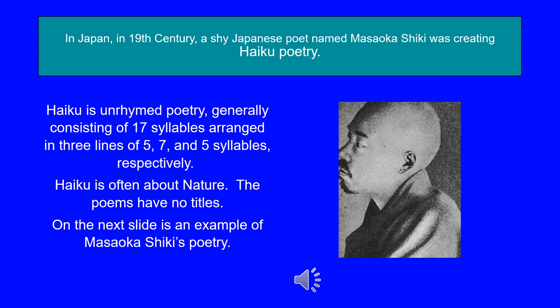Haiku is unrhymed poetry, generally consisting of 17 syllables arranged in three lines of five, seven, and five syllables respectively. Haiku is often about nature. The poems have no titles.